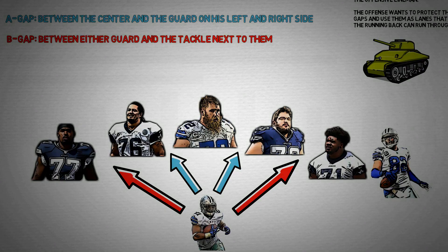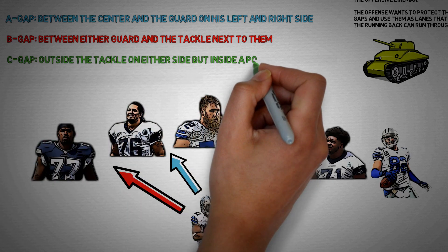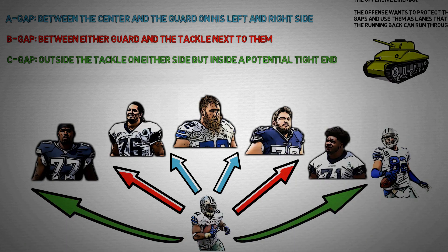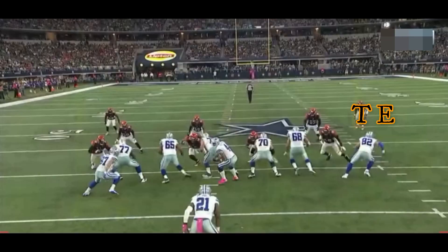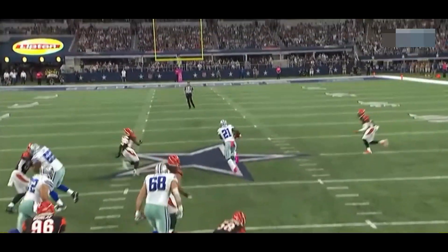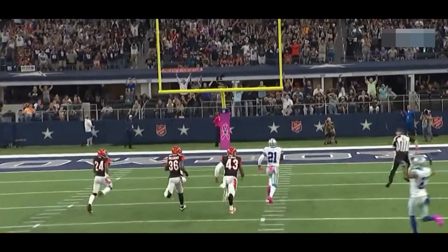One more move to the outside and we have the C-gap outside the tackle on either side, but inside a potential tight end. You can see it being shown by the green arrows on the screen. On this play, you have a tight end lined up to the far right with the right tackle inside of him. The tight end will swing out, but as the run is still outside the right tackle, it is still considered a C-gap run as Elliott goes all the way to the house against the Cincinnati Bengals.